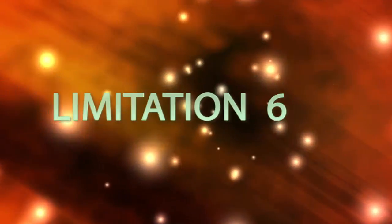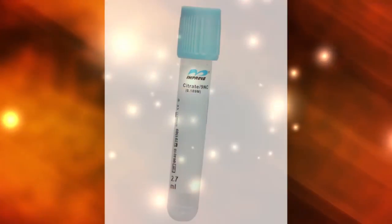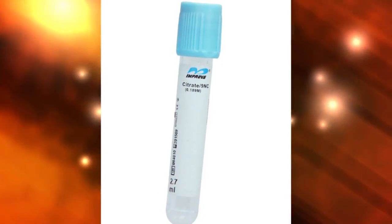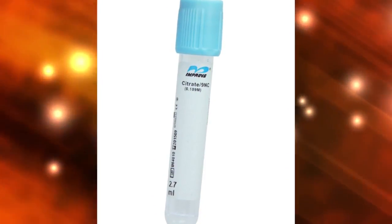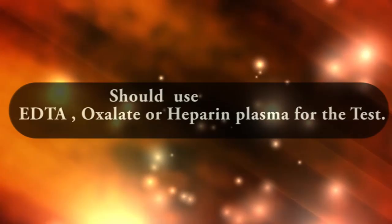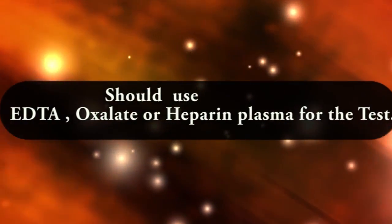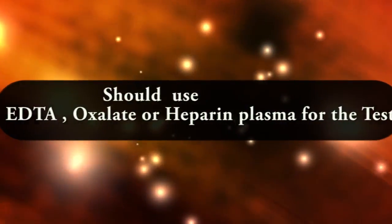Tube Method. Limitation Number 6: Citrate plasma may be clotted by any organism that can utilize citrate. Therefore, EDTA, oxalate, or heparin plasma should be used for the test.